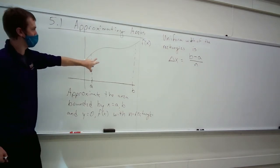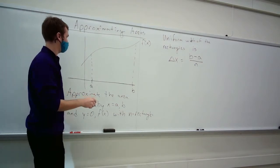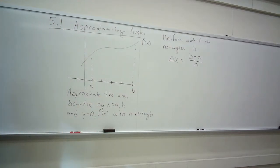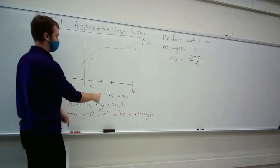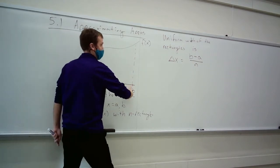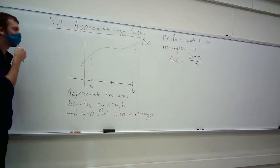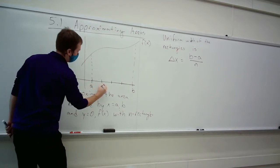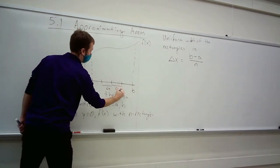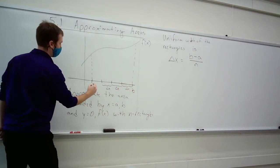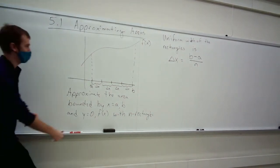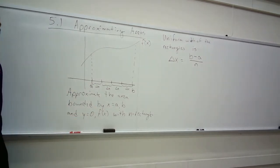I'll pick 4 for this drawing, but really this is for any number. If I pick 4 rectangles, I take this interval and divide it into 4 equal pieces. The width here is Δx for all of these — they're all exactly the same width, which is (b − a) divided by how many rectangles I'm putting in.